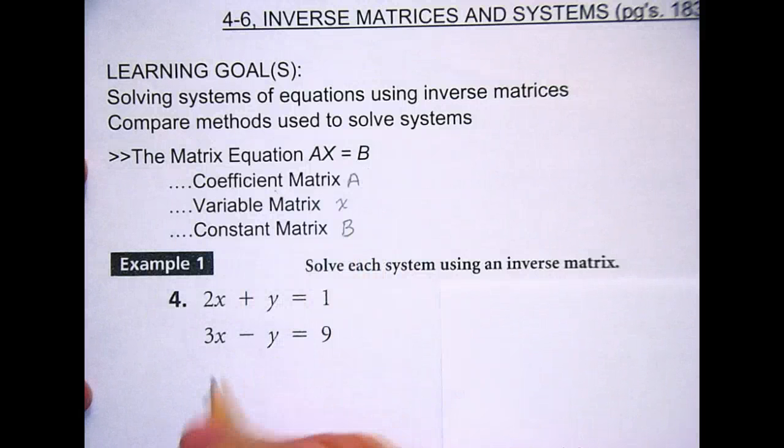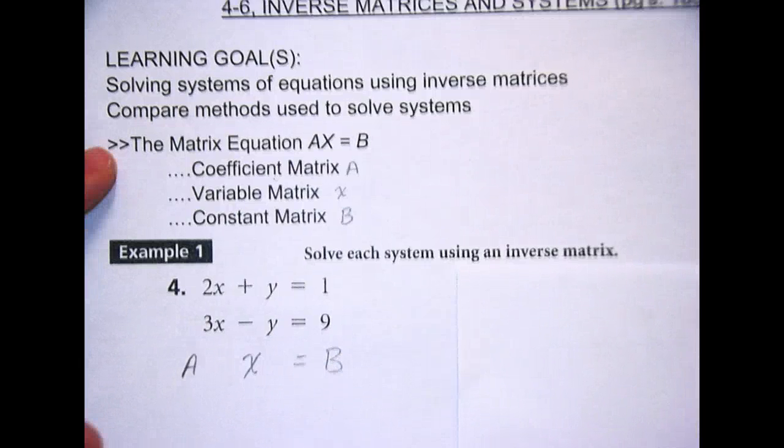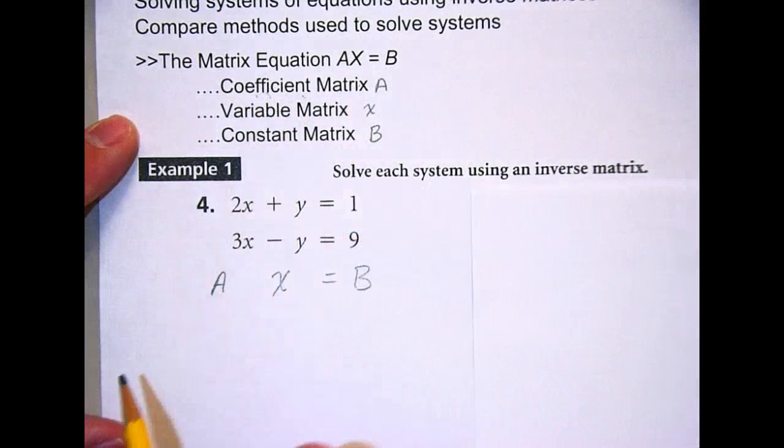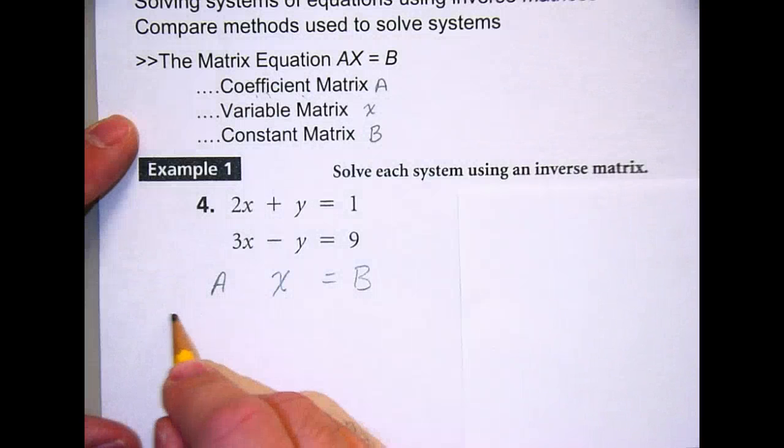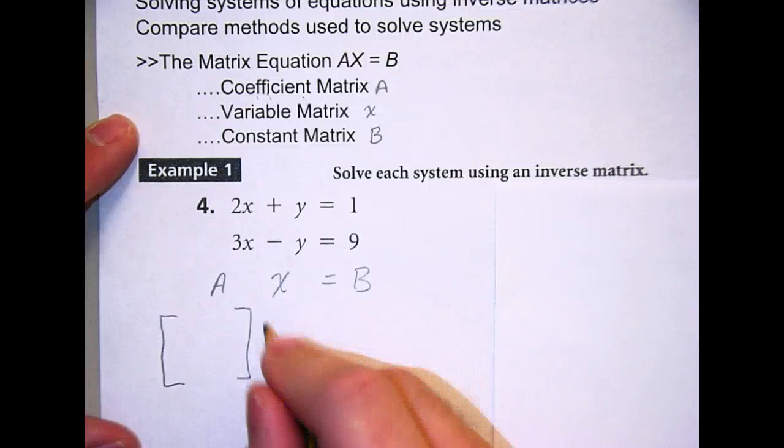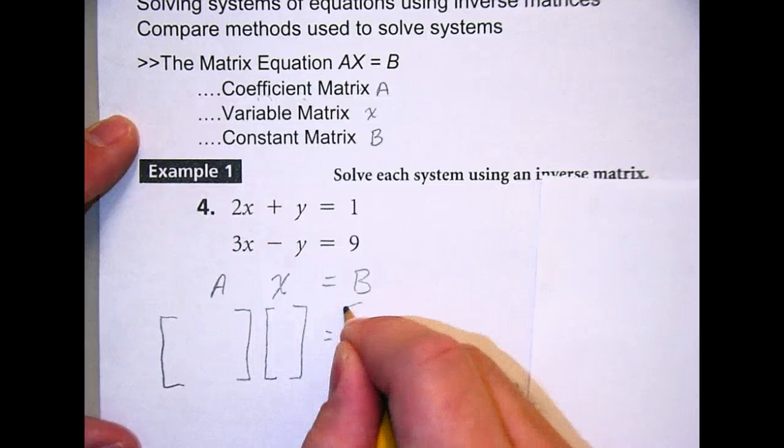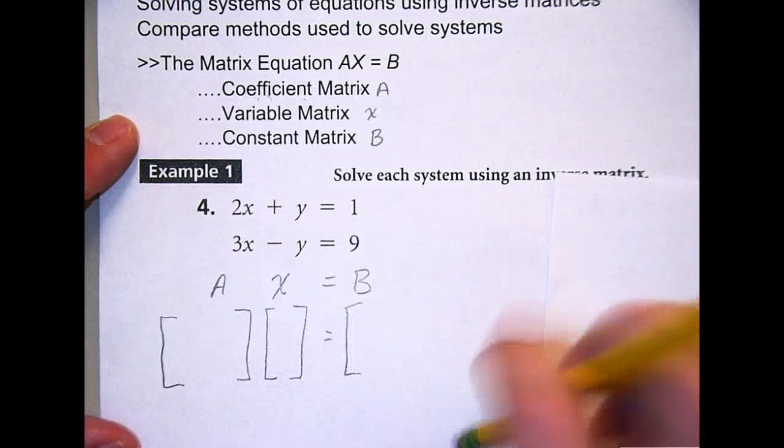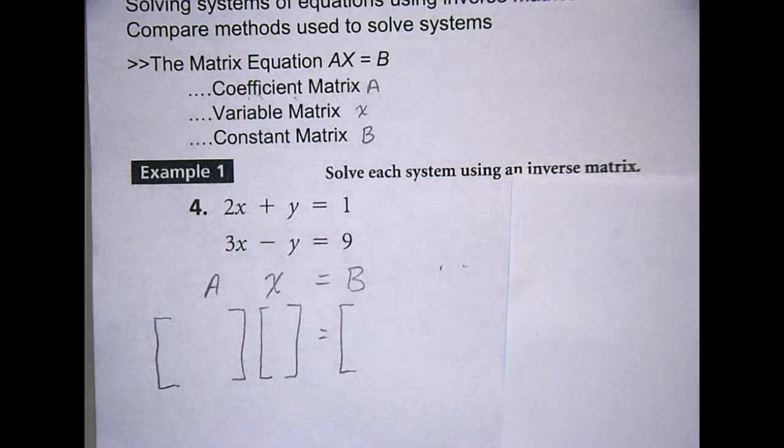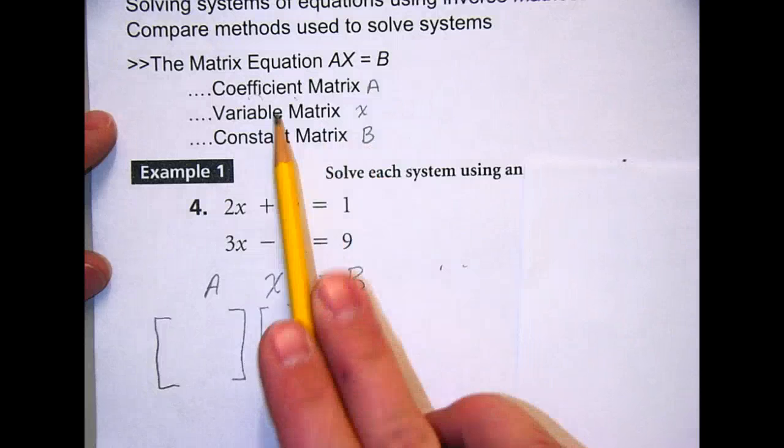So if I'm going to use the equation A times X equals B, which is what we want to do here to solve this, we've got to define A. Well, A is going to be our coefficient matrix. Tell your neighbor what a coefficient is. Alright, let's see if anyone knows. What is a coefficient? Alyssa? Isn't that what it's being multiplied by? Yeah, good. It's what your variable is being multiplied by.